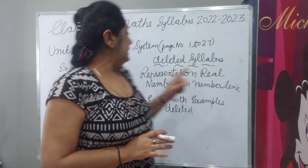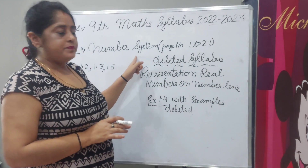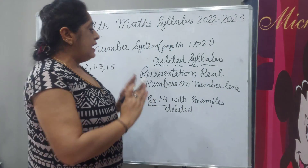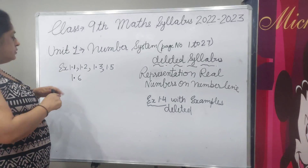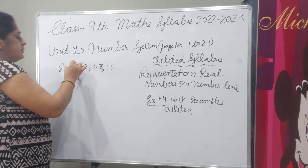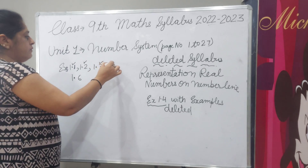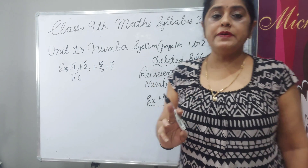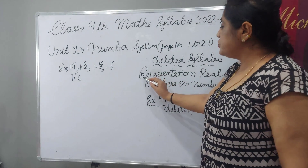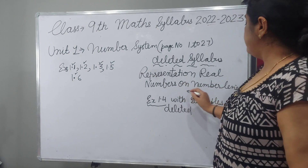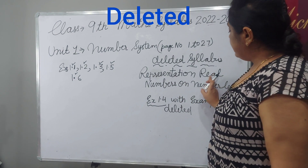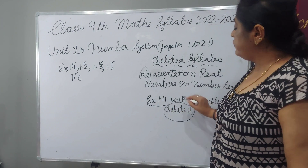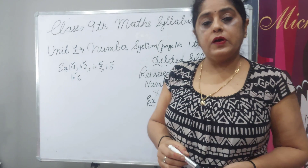For unit 1, number system, which is up to page number 1 to 27 in your book. You have to do exercises 1.1, 1.2, 1.3, 1.5, and 1.6. What is deleted by CBSE: the topic representation of real numbers on a number line, and the related exercise 1.4 with examples is deleted.